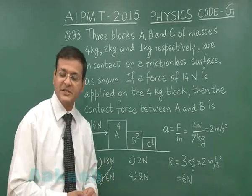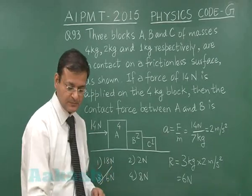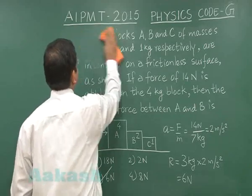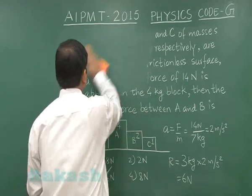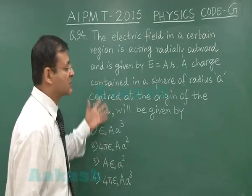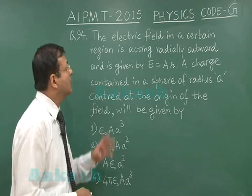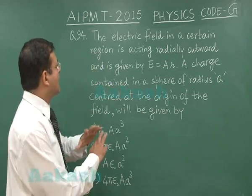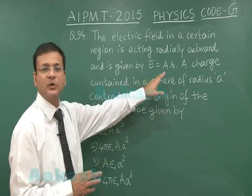Now, let us move on to question number 94. In this question 94, as you can see, this question is based on Gauss's law. Here, it is written that the electric field in a certain region is acting radially outward and is given by E equals AR.